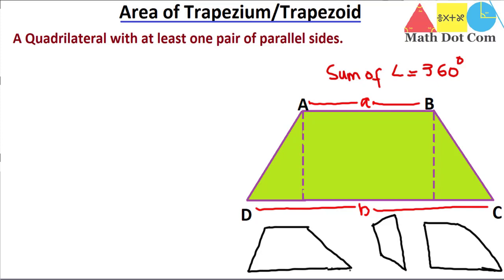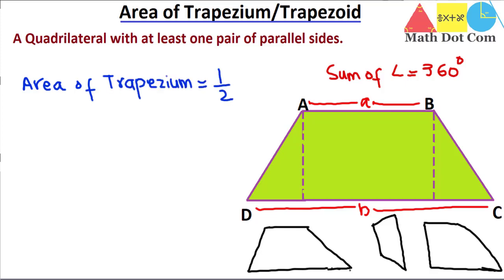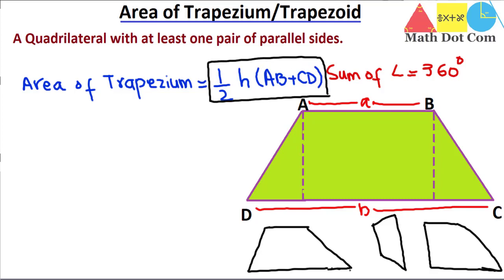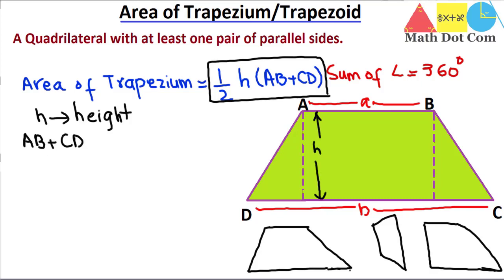Now let's see how you can find the area. The formula is: Area of trapezium = 1/2 × height × (AB + CD), or the sum of the parallel sides. This is the formula for finding the area of any trapezium shape. Here, h is the height of the trapezium, and AB + CD is the sum of the parallel sides. If you are given these two things, you can easily find the area.